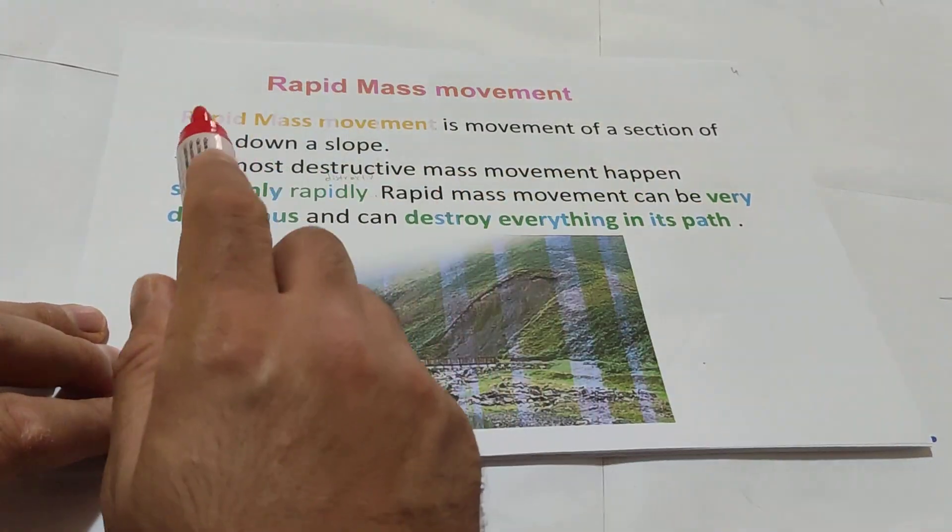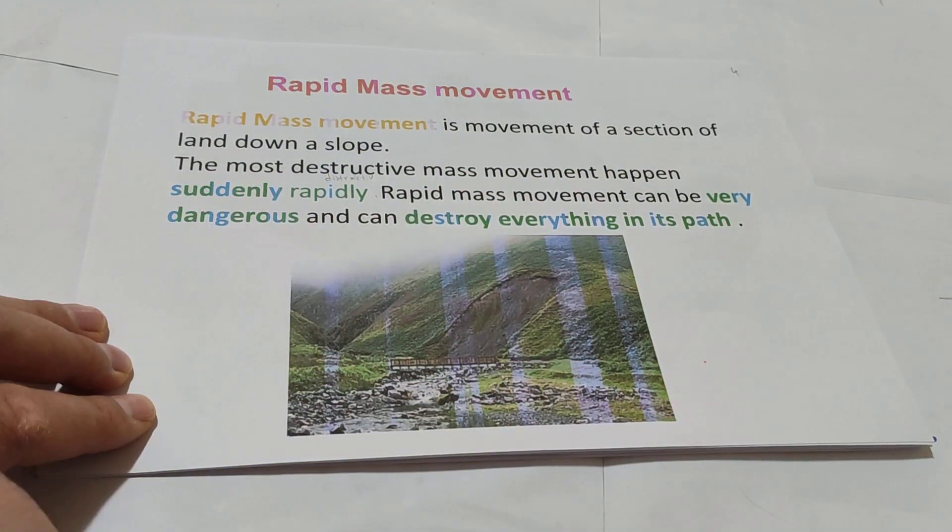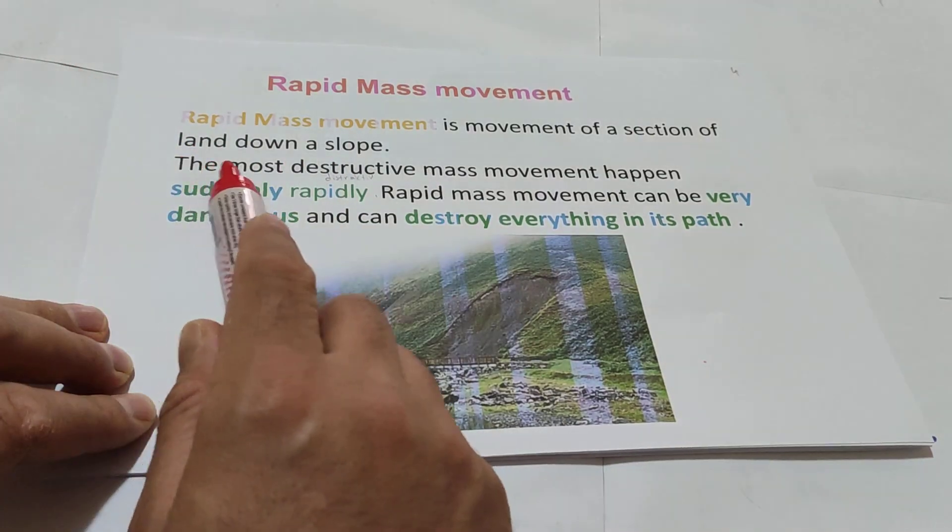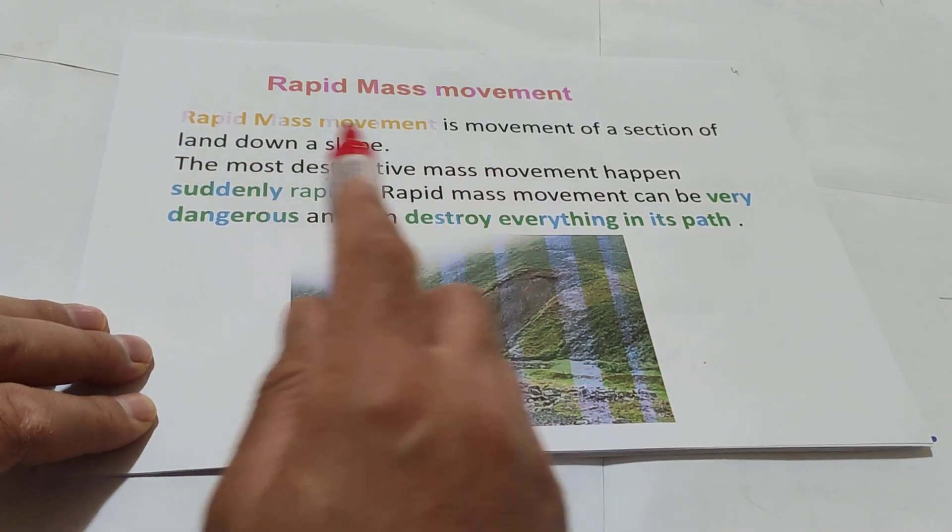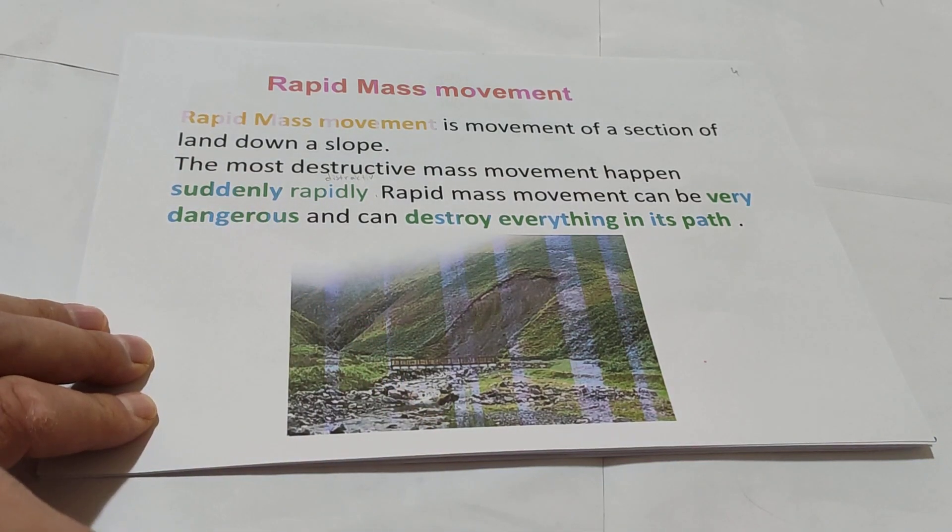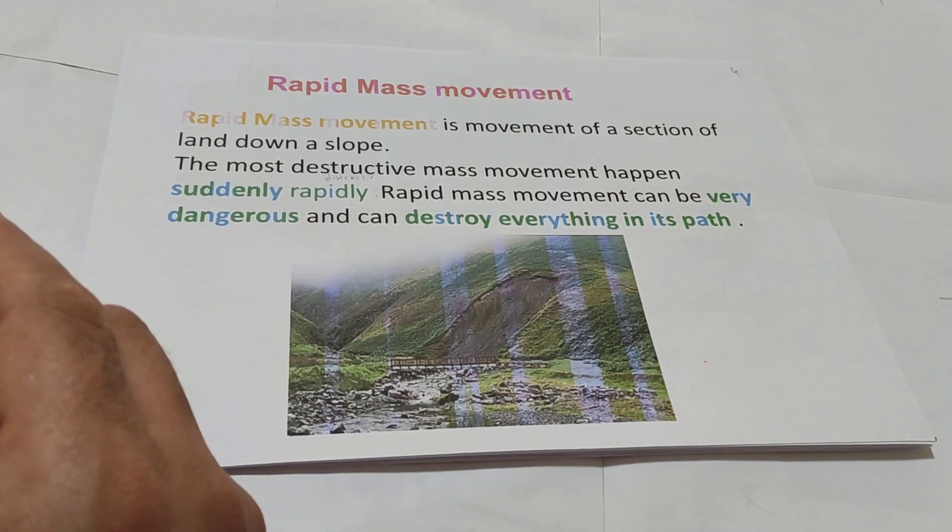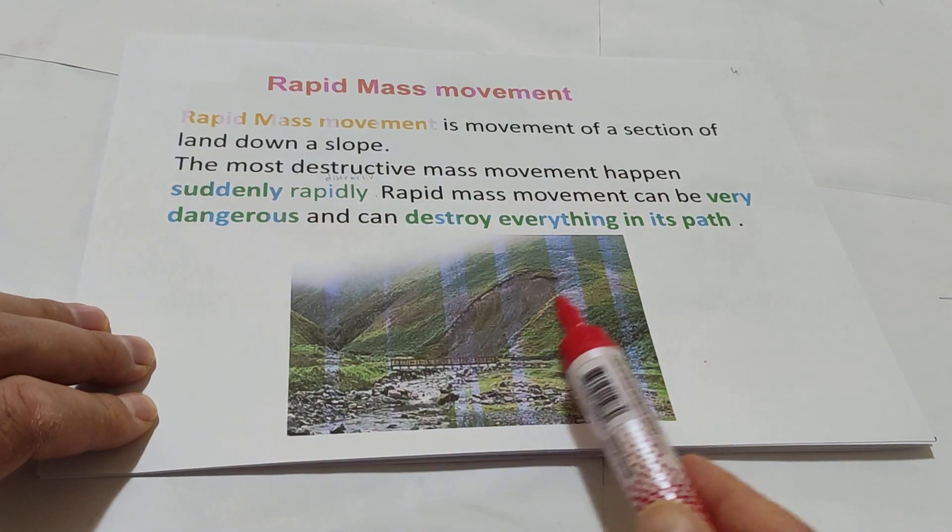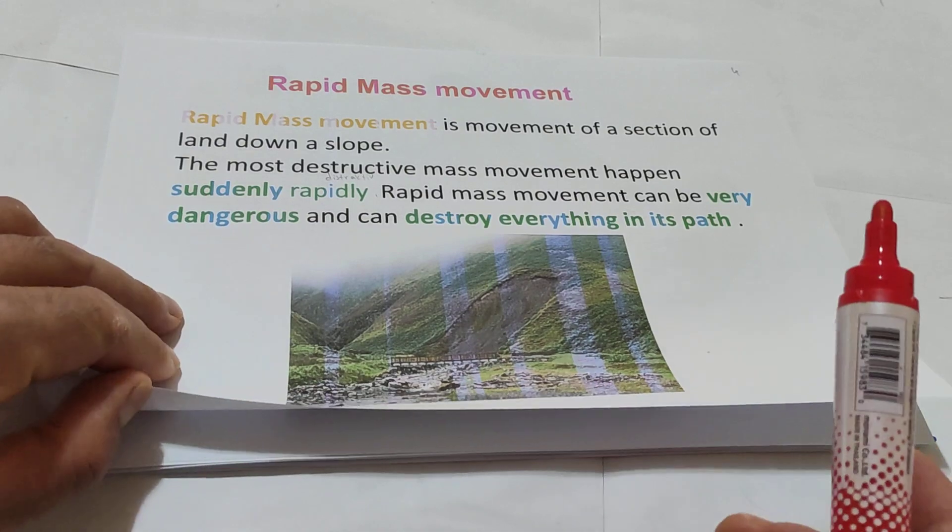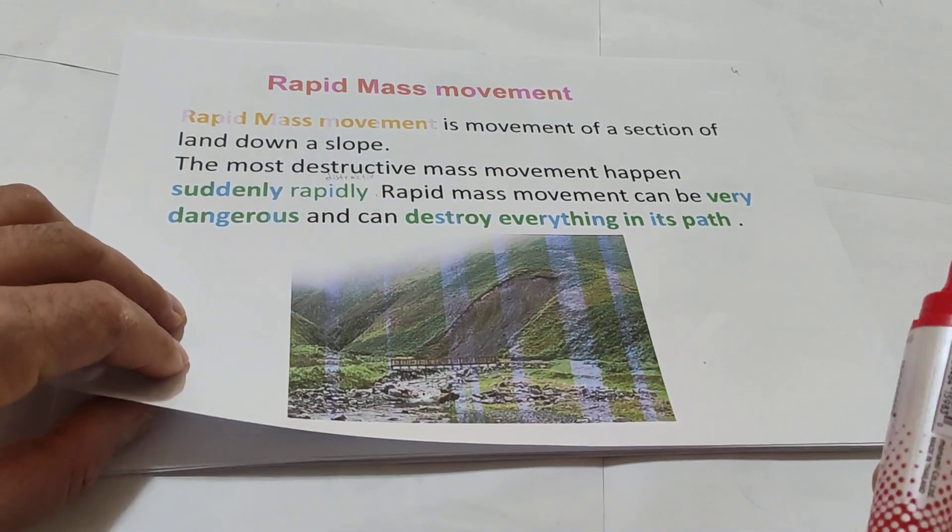Rapid mass movement is movement of a section of land downslope. The most destructive mass movement happens suddenly and rapidly. Mass movement can be dangerous and can destroy everything in its path. For example, it can destroy animals, human beings, plants, cars, bridges, roads.